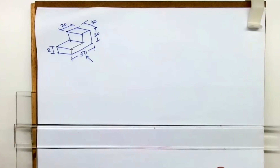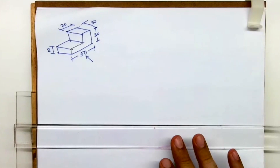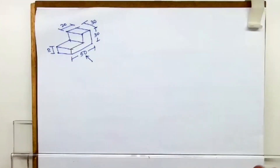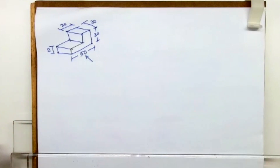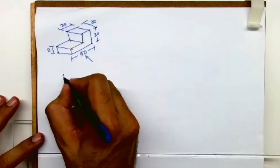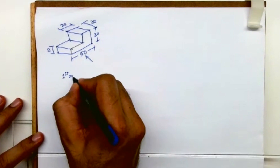Welcome to technical drawing. Today I'm explaining a very simple concept about first angle and third angle. Many of you have a query about how to solve first angle and third angle problems, including where the front view and top view will come. So I'm going to give you a simple hint on how you can identify the placement. Let's say if I want to draw in first angle.